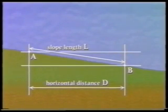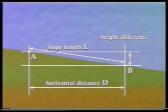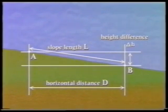If horizontal planes are added through A and B, then the shortest distance between them lies at right angles to these two planes. This is known as the height difference or the vertical distance, and it is usually given the symbol delta H.